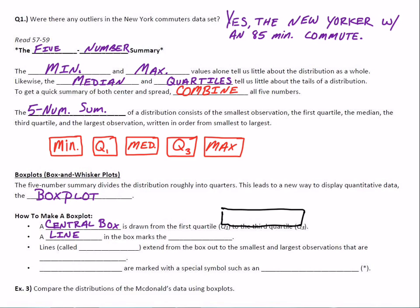Next, we need a line in the middle that marks the median. Let's put a line wherever the median is. It doesn't have to be exactly in the middle — it's just wherever the median falls between Q1 and Q3. It doesn't have to be in the middle, but it has to be somewhere in the box.